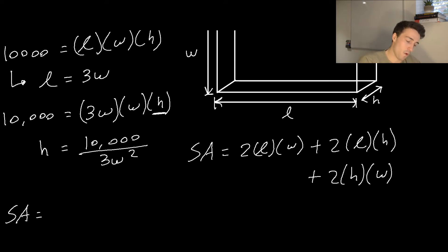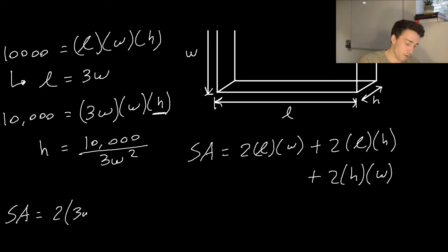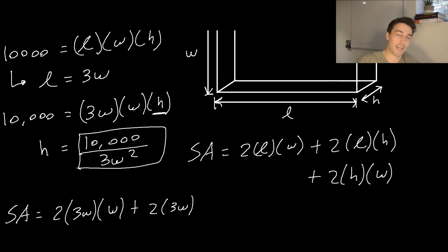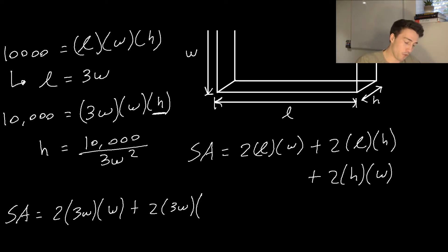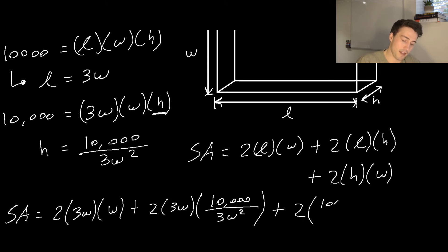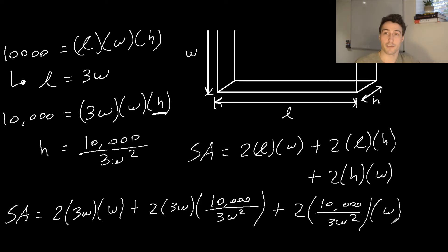I'm going to write the surface area in terms of W, because that is what our constraint function is written in terms of. So it'll be 2 times 3W times W, plus 2 times 3W times H — now using H equals 10,000 divided by 3W squared — plus 2 times 10,000 over 3W squared times W. Now we have the surface area only in terms of width, so we're able to minimize it with one variable. Expanding and simplifying, this gives us 6W squared plus 20,000W to the negative one plus 6,666.67W to the negative one.